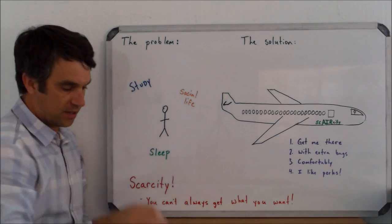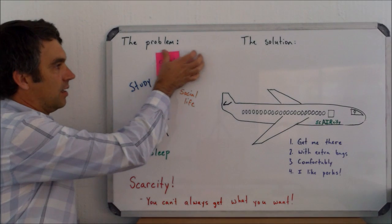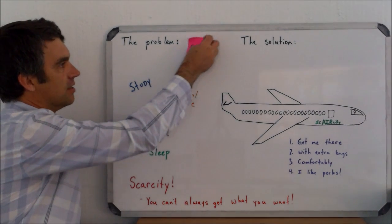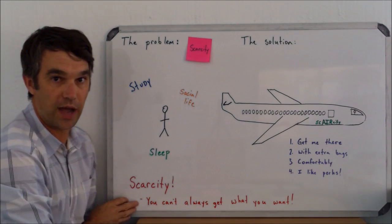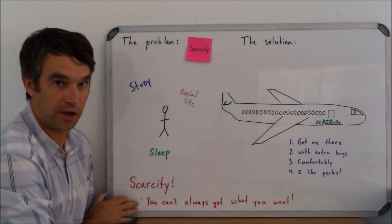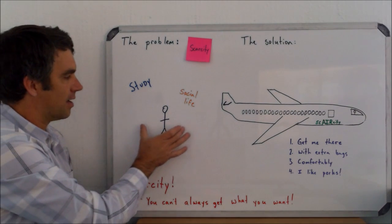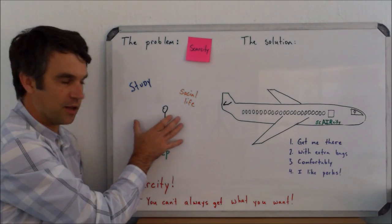The key problem in economics is the problem of what we call scarcity. The idea of scarcity is that you simply don't have time or you don't have the resources to get everything that you want. There's a good Rolling Stones song about that, right? A common meme, I think, is what we call it.